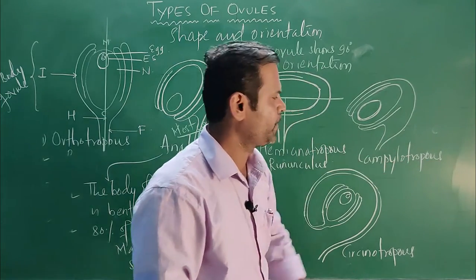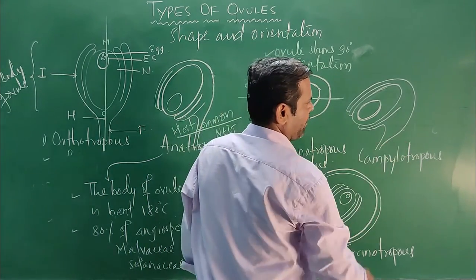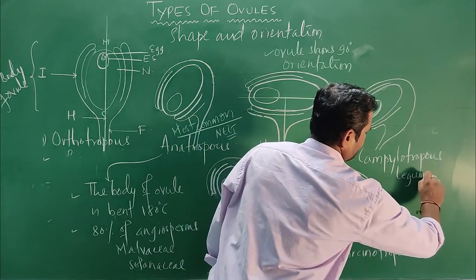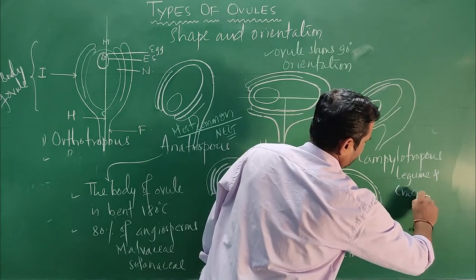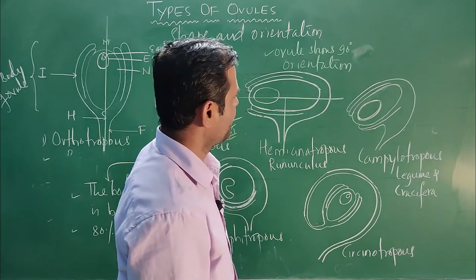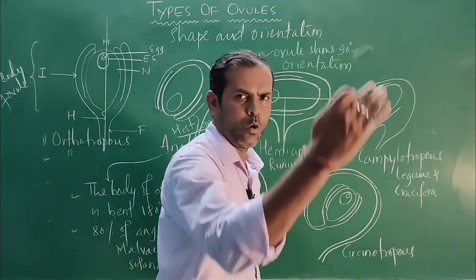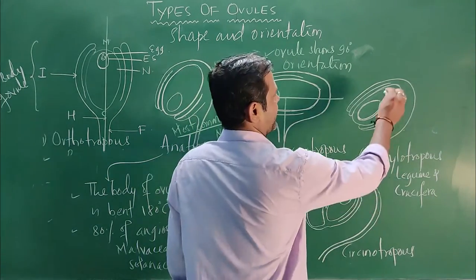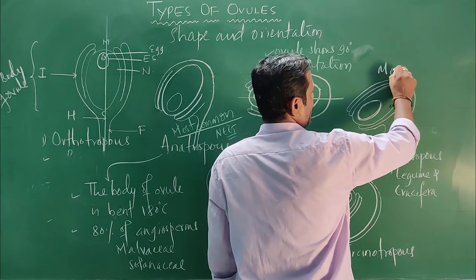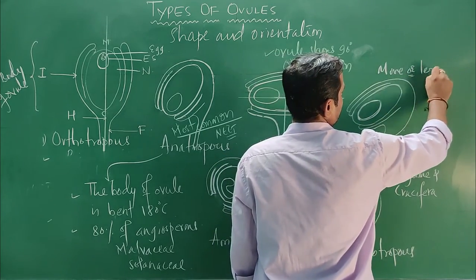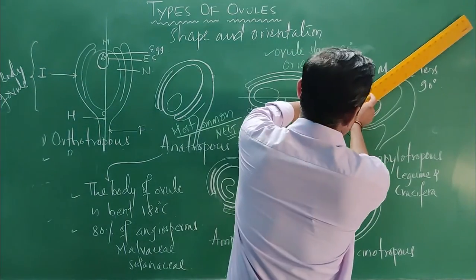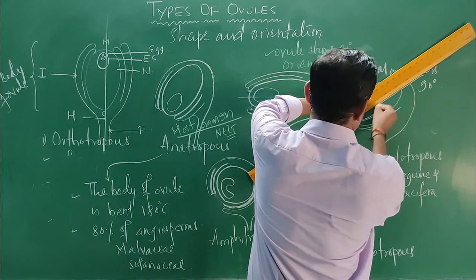The fourth type is the campylotropous ovule, found in legume plants and cruciferous family. The curvature or ovule orientation is more or less 90 degrees — not exactly 90, but more or less 90 degrees.